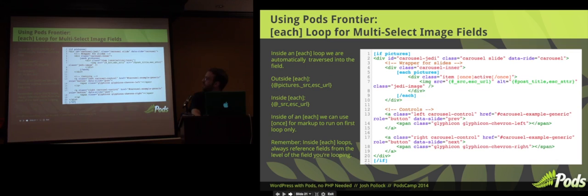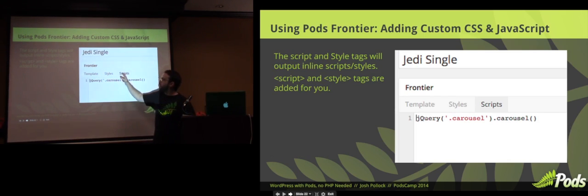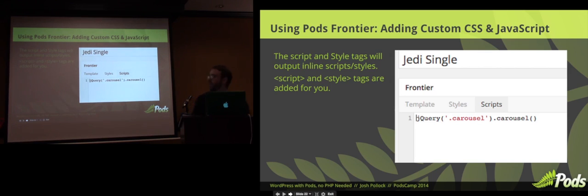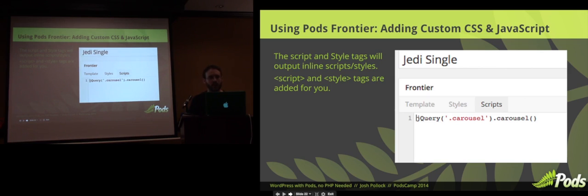Frontier adds two extra tabs to Pods templates — styles and scripts. Without Frontier you just see template; now we have styles and scripts. These will be automatically inserted once on the page when you use this template. If the template runs five times on a page, it will still insert the script only once, but it won't run on all your pages. In this example, to initialize the Bootstrap carousel I just need to say jquery.carousel. If I want custom styles, I can add them to my style.css, or I can drop styles into the styles tab and Frontier will automatically wrap them in a style tag.